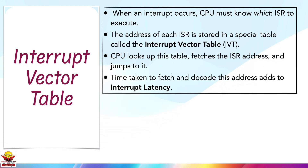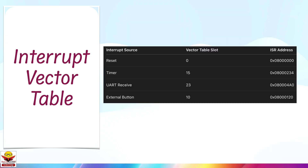When an interrupt occurs, the CPU must know which function or ISR it should execute — it doesn't guess or search randomly, it follows a very systematic process. Each microcontroller has a special memory region called the Interrupt Vector Table. Each interrupt source, like a timer or UART, is assigned a specific slot number in the vector table, and that slot points to the ISR address where the CPU should jump when the interrupt occurs.